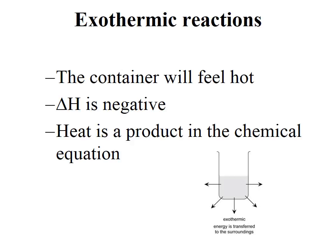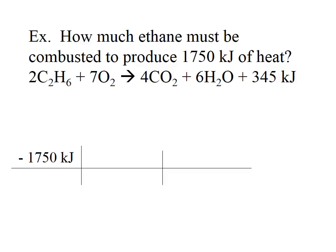In this example — a reminder that exothermic reactions transfer energy to the surroundings — we're asked how much ethane must be combusted to produce 1750 kilojoules of heat. We look at our balanced equation: 2 moles of ethane and 7 moles of oxygen produce 4 moles of carbon dioxide, 6 moles of water, and 3045 kilojoules. We're given ethane and kilojoules in the question, and in the equation there is a relationship between the amount of heat produced and ethane.